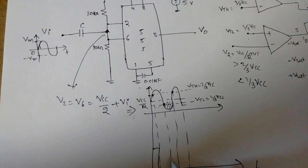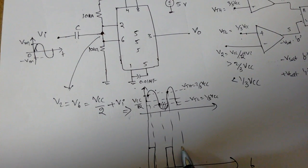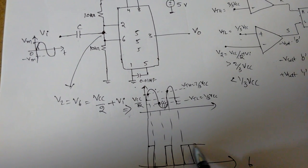Now again the moment it is less than 1 by 3 VCC, the output is becoming high. Then again low, then high, and so on. It follows continuously.